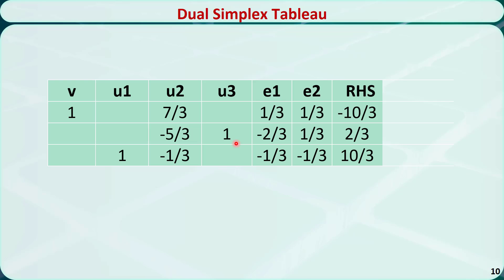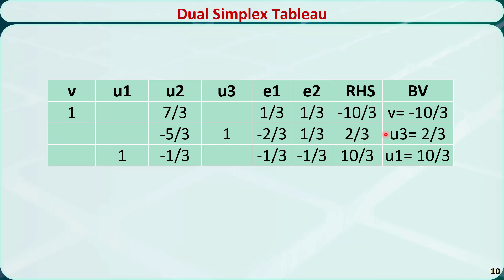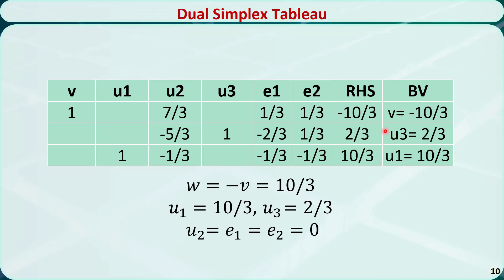This is the new tableau. The basic variables are u3 and u1. Checking optimality, the right-hand side of each constraint is now positive, so this tableau is optimal. The optimal solution to the dual problem is: w = negative v = 10/3, u1 = 10/3, u3 = 2/3, and u2 = 0.